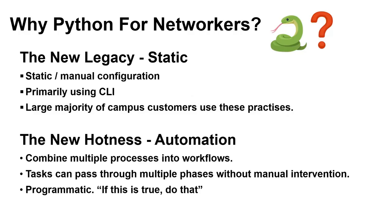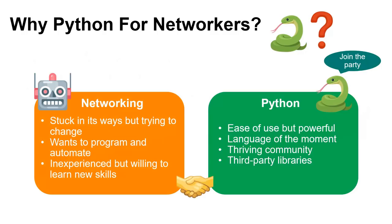This is what we call a programmatic approach, and it requires code. On the left hand side we have networking, which is stuck in its ways but trying to change — we want to start to program and automate, we're inexperienced but willing to learn new skills. On the right hand side we've got Python, which is pretty easy to use but powerful, very much the language at the moment, with a thriving community and great third-party libraries like Requests that can get us going quickly.